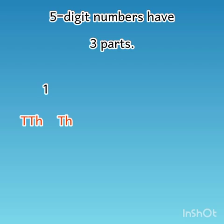5-digit numbers have 3 parts. Number 1, 10,000 or 1000 combine hoker, 1 part banaate hain. Number 2, 100s ka part. Number 3, 10s or 1s ka combine part.